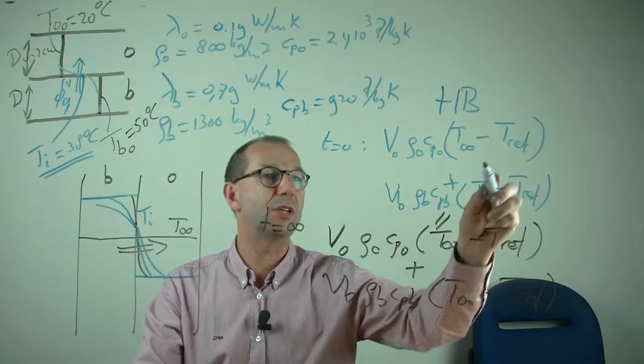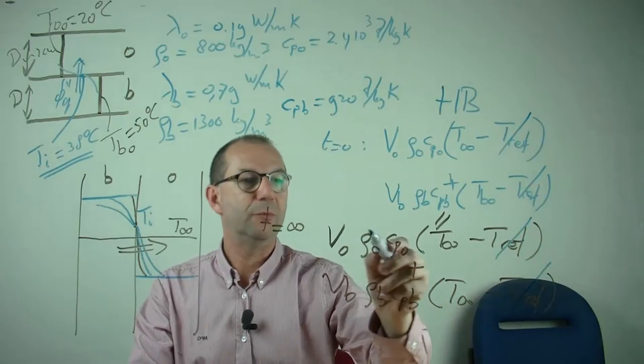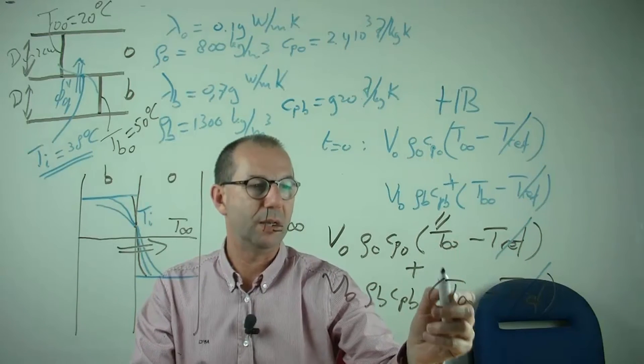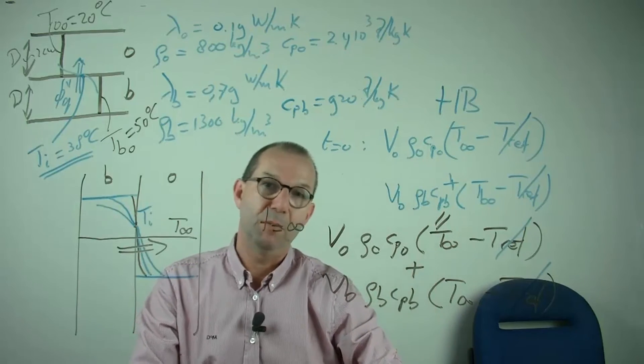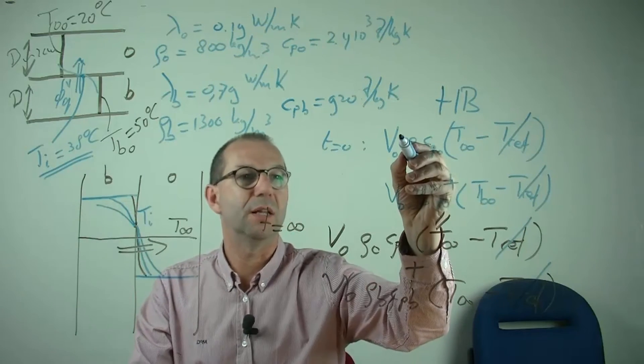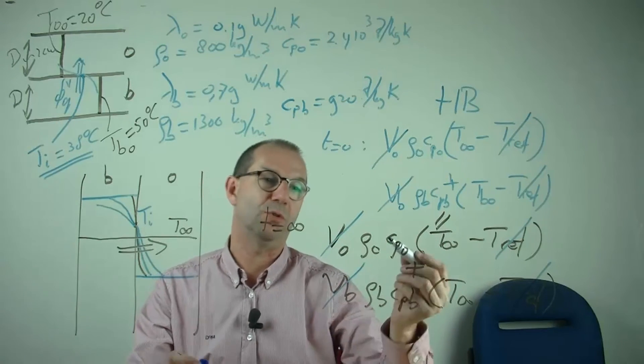Okay, so if I scratch this out and I reread this equation, then there is only one unknown, T-Infinite, and I can solve that. We have made it simple for ourselves in that the volumes are all the same, because the thickness of these layers is assumed. So that drops out as well.